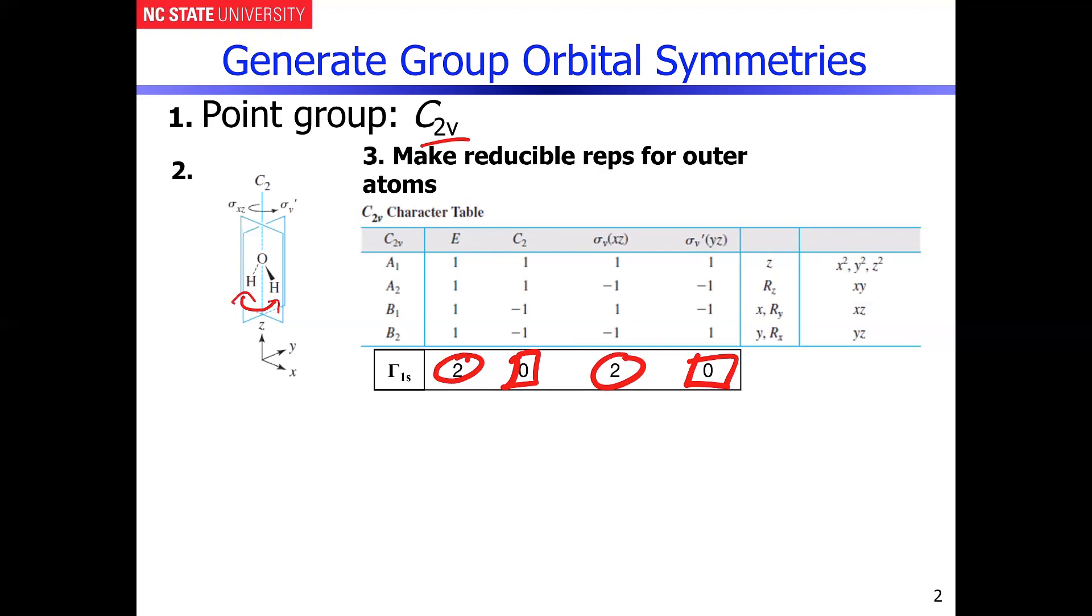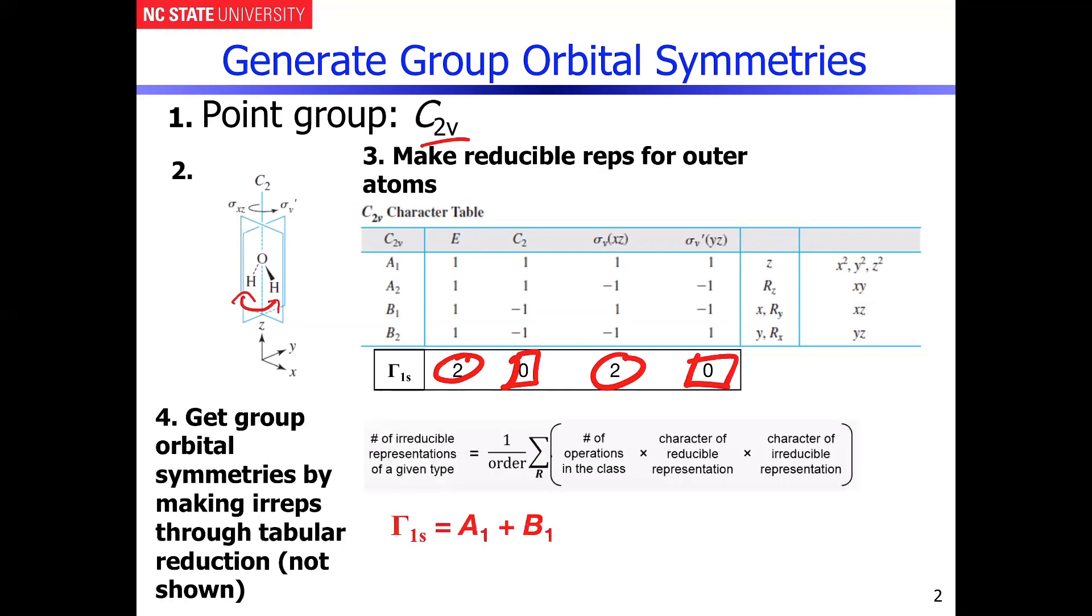So then we're in the situation now where we can reduce that representation to its irreducible components. And we've already covered this numerous times in class. So I'm not going to belabor the point here. But use tabular reduction as an alternative to using this formula to simplify the process. And when you do this you can clearly see that you generate the two irreducible representations of A1 plus B1.